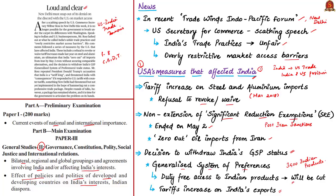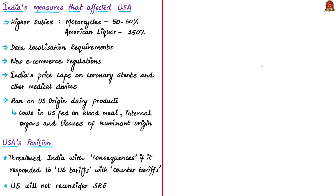Secondly, some Indian protective measures have affected USA's trade with India. USA is continuously voicing its concern to reduce the higher duties imposed on USA's products such as motorcycles and American wine. The import tariffs for motorcycles are around 50 to 60 percent, and for American liquor it is 150 percent. India is also strict with its data localization requirements, asking social media giants to save digital data within India. New e-commerce regulations focusing on data localization, privacy safeguards and combating counterfeit products are making American companies difficult to continue their trade with India.